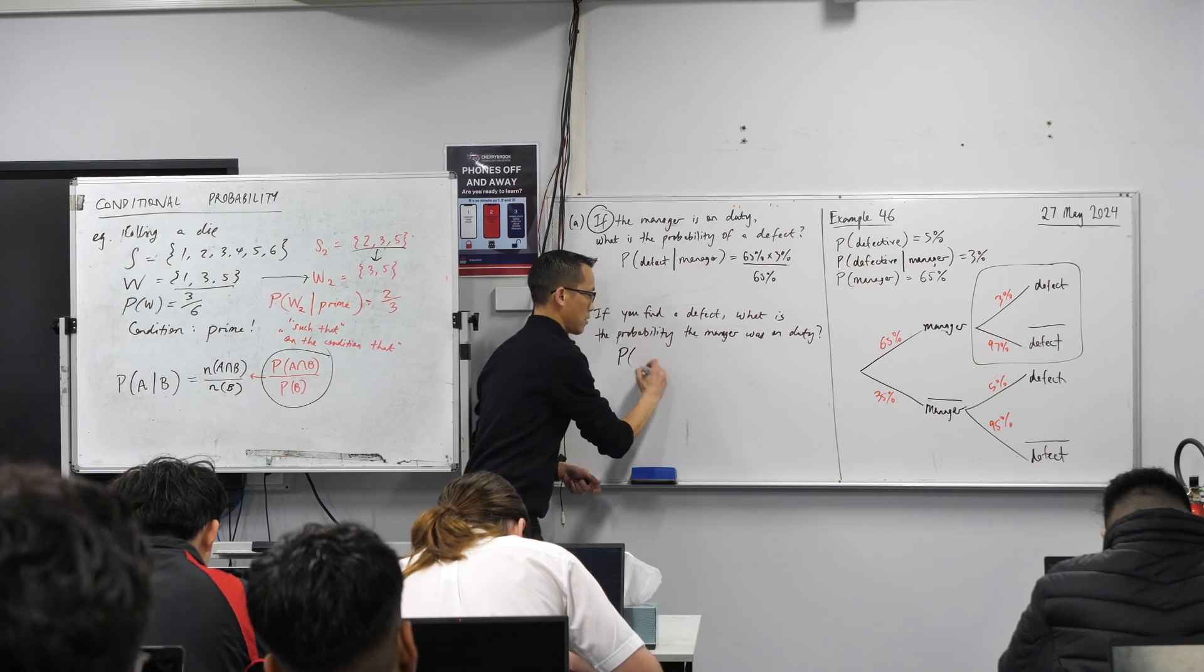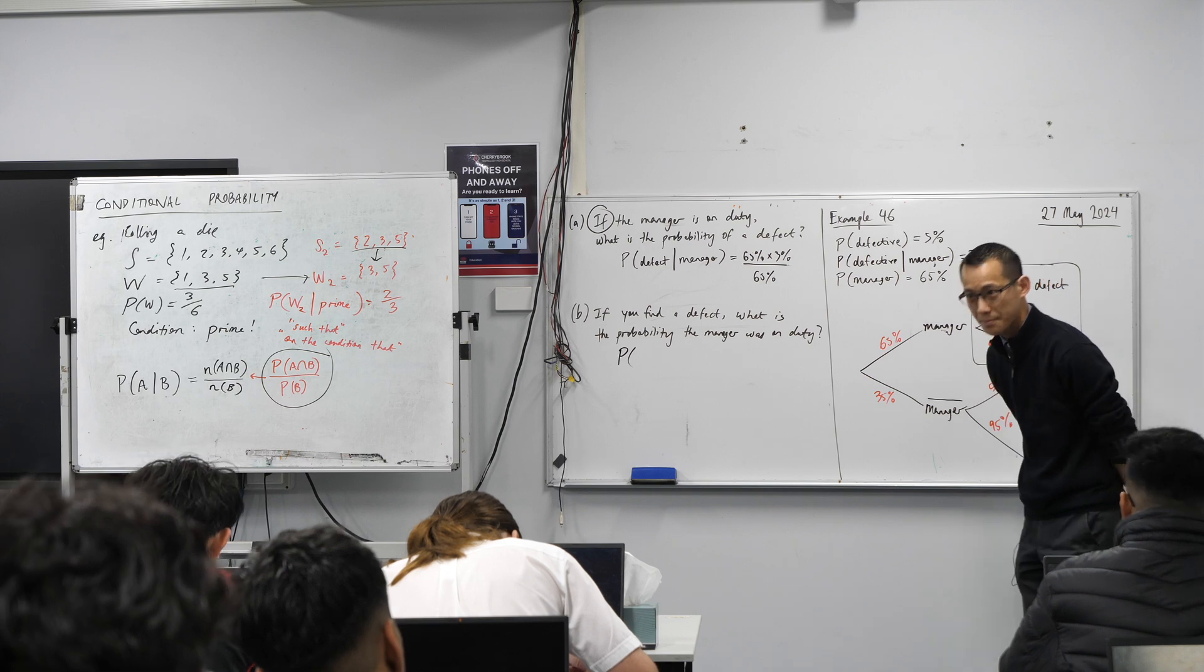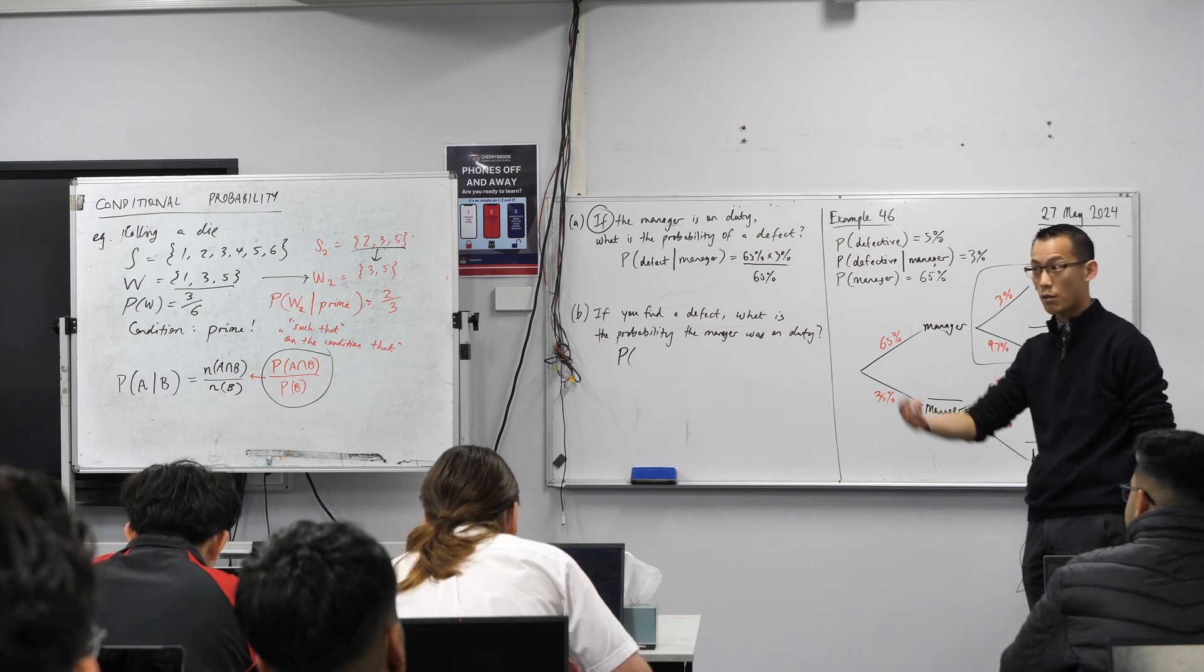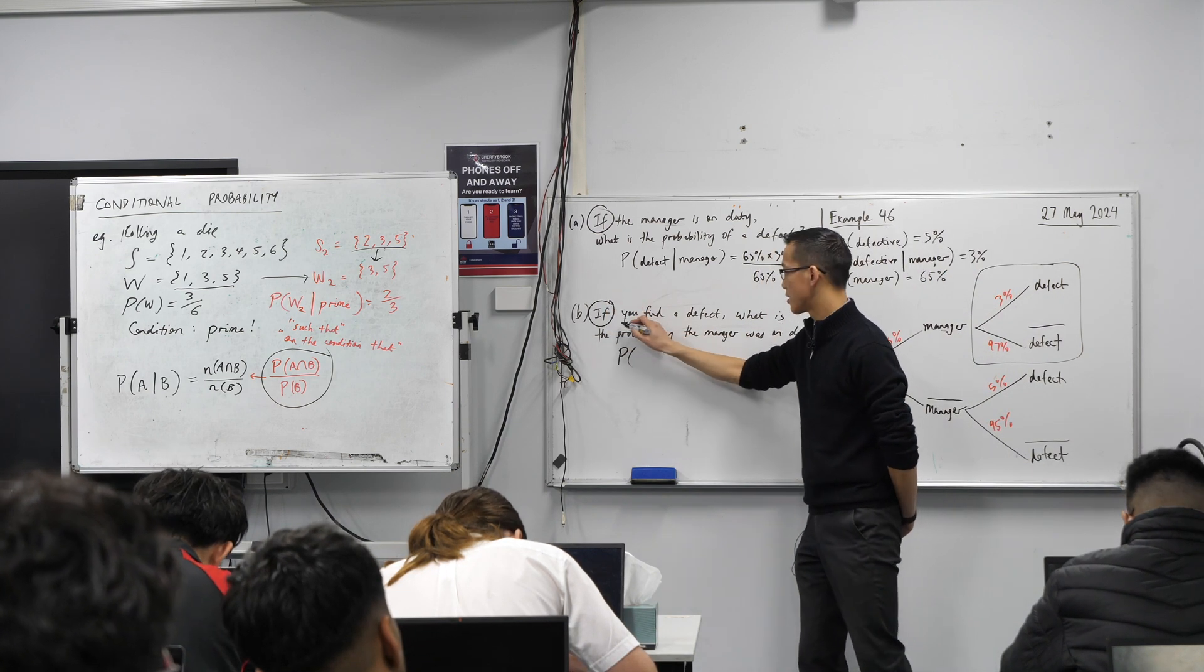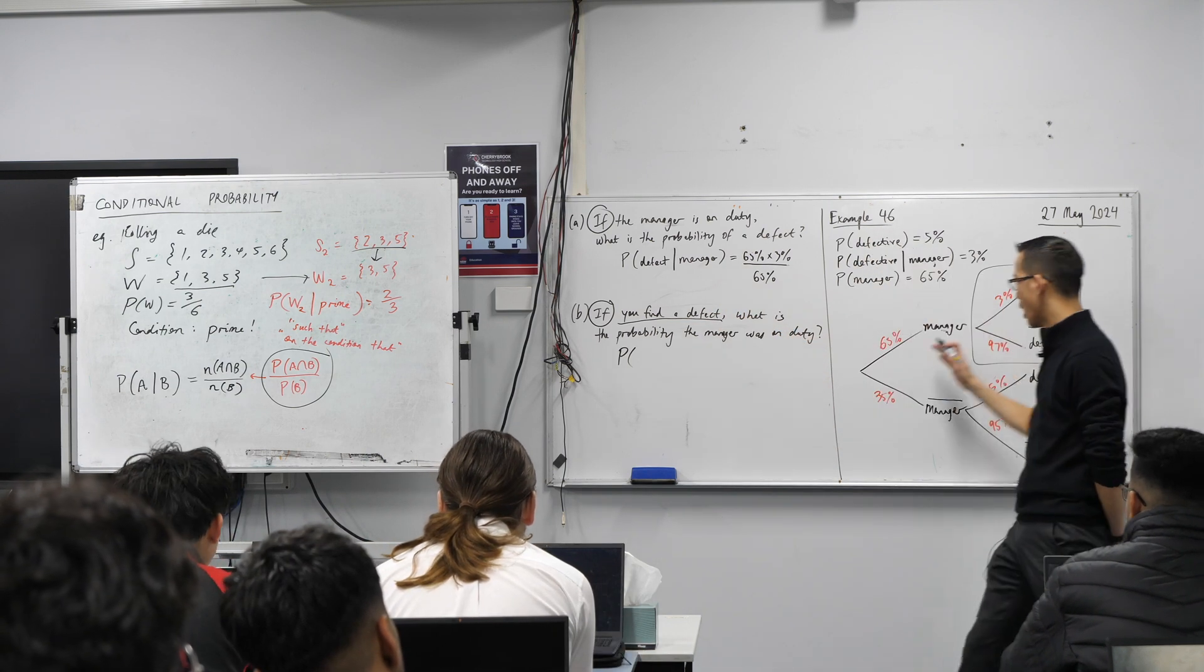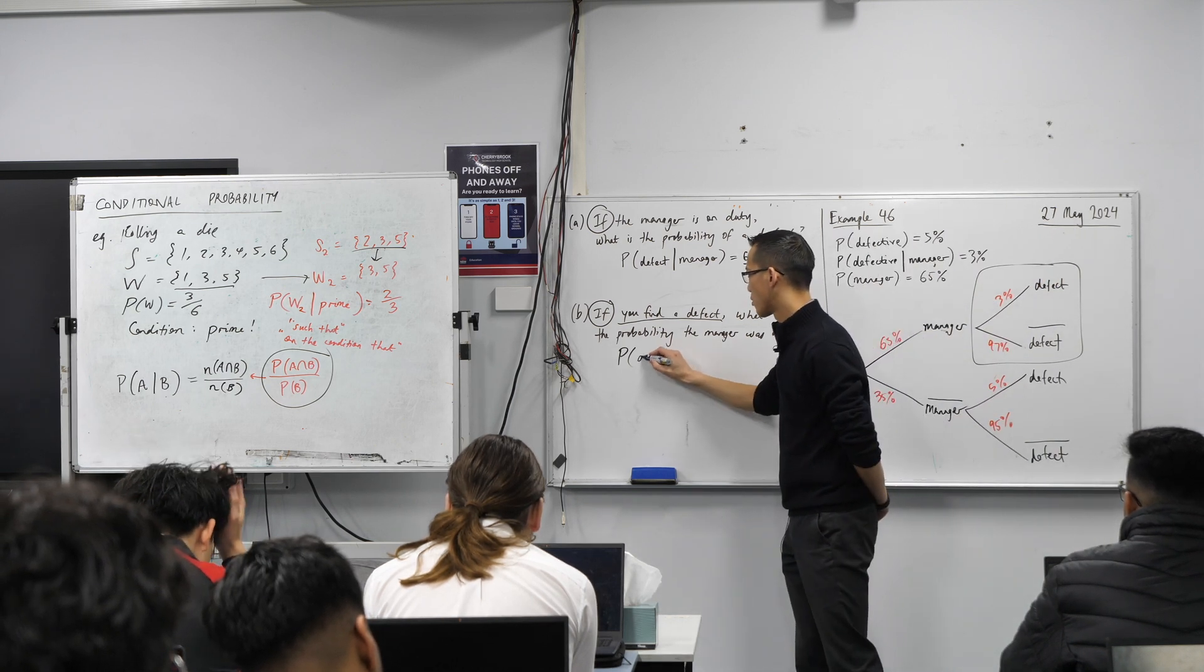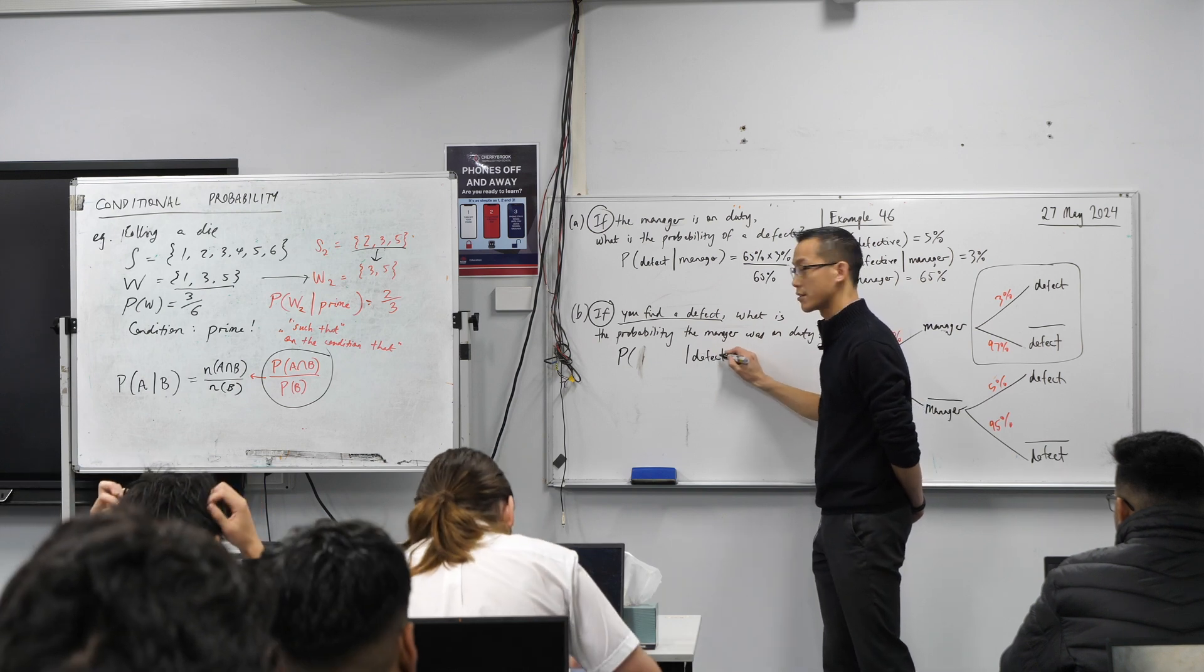So let's start by writing, how do I say this? There's a condition in here, right? What's the condition? Remember I gave you some clues as to the words you can look for. What are you thinking? The condition is if you find a defect. This is the thing that's known. It is a bit weird because you're like, I'm going backwards through the situation now, right?